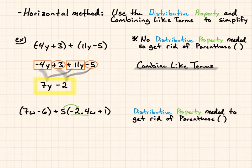And I just write it out as, that's all I'm going to be multiplying. 5 times negative 2.4 and 5 times 1. I end up with 5 times negative 2.4 gives me negative 12. And 5 times 1 gives me 5.